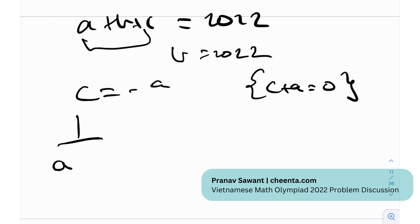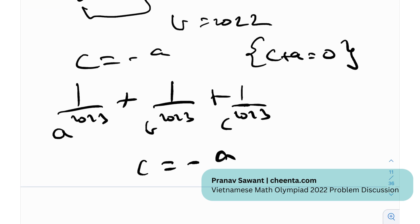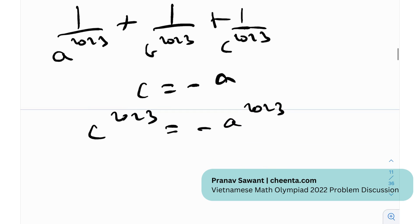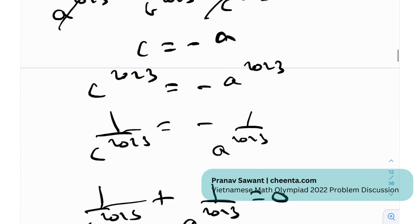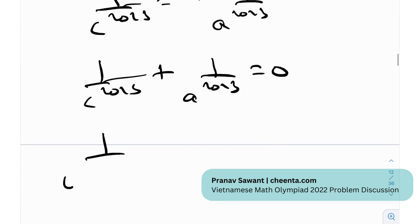So you get b equals 2022. And what would the value of the answer be? 1/a^23 plus 1/b^23 plus 1/c^23. Now you actually see because c is negative, c equals negative a, if I raise this to the 23rd power, this will be negative of a^23. So essentially 1/c^23 equals negative 1/a^23. And 1/c^23 plus 1/a^23 would also be 0. So effectively this thing plus this thing is 0. So what you would be left with is 1/b^23. The answer would be 1/2022 raised to the power 23, right?